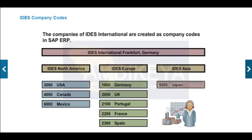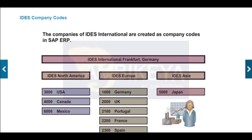Each company code has a local currency. The local currency of IDES AG is Euros. Amounts posted in foreign currencies are automatically converted to the local currency. The affiliated group, i.e., IDES International, and corresponding subgroups such as IDES North America, are not set as accounting entities.